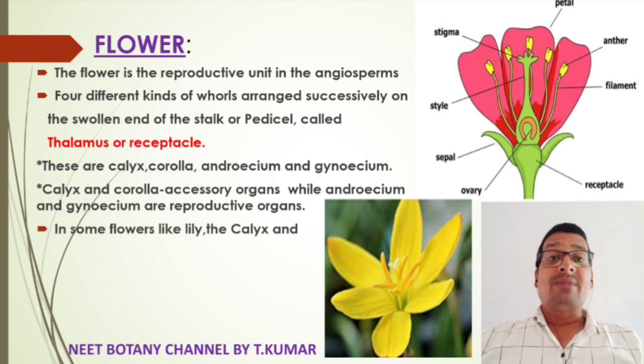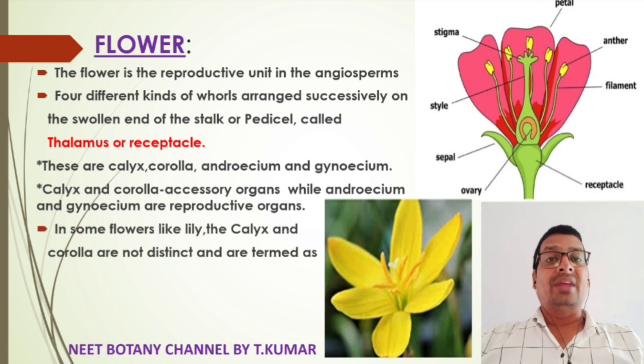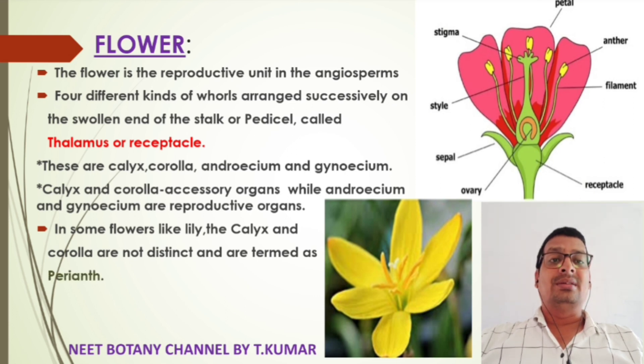In some flowers like lily, the calyx and corolla are not distinct and are termed as perianth.